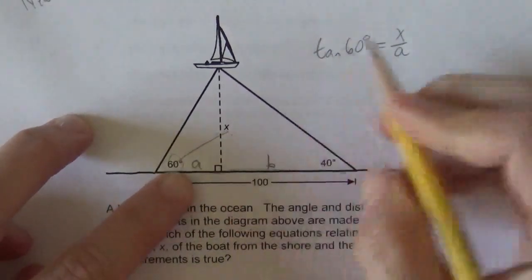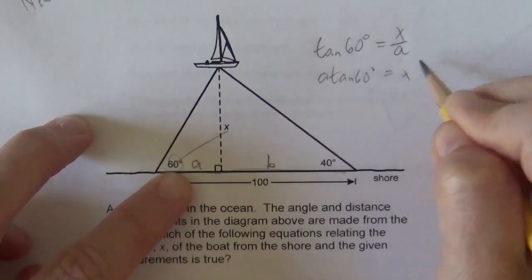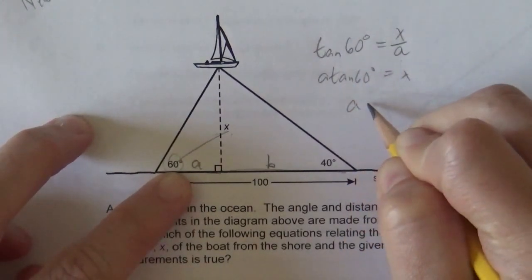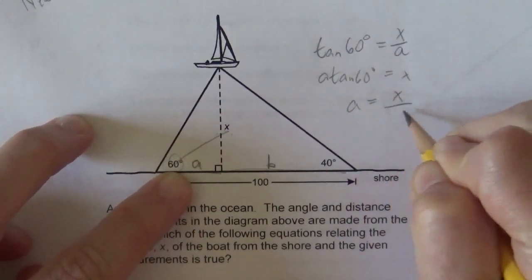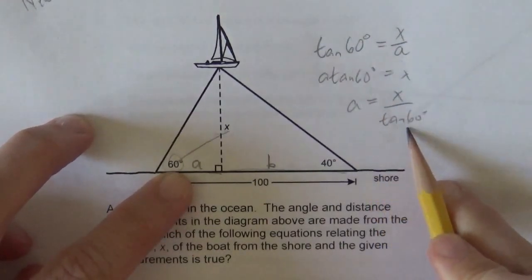And so A would end up being, so A tan 60 would equal x, multiplying by A, and then dividing by tan 60, A is x divided by tan 60.